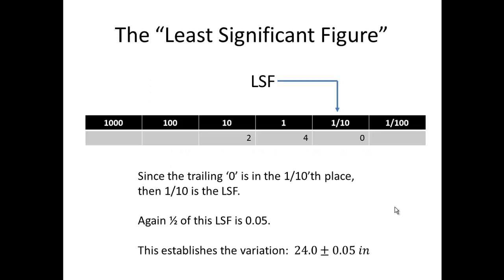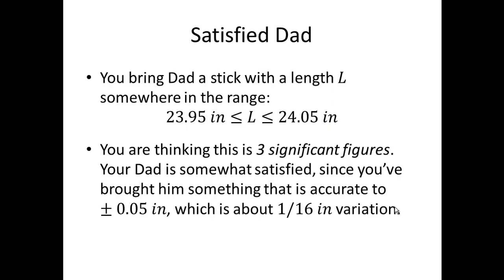Now the zero is in the one-tenth place again. Since the trailing zero is in the one-tenth place, one-tenth is the least significant figure. Half of the least significant figure here is 0.05. So this establishes the variation 24 plus or minus 0.05 inches. So you bring your dad a stick with a length somewhere between 23.95 inches and 24.05 inches. You're thinking this is three significant figures, and your dad is somewhat satisfied since now you've brought him something accurate to within plus or minus 0.05 inches, which is about a sixteenth of an inch.